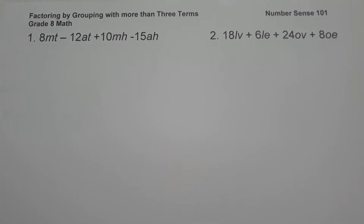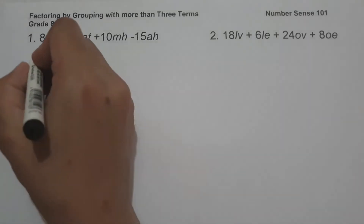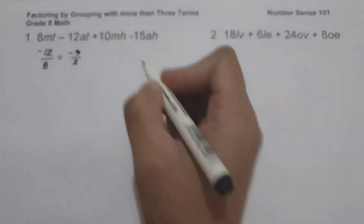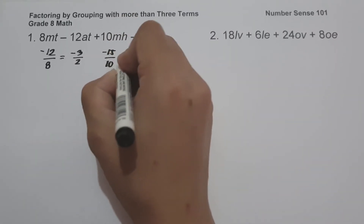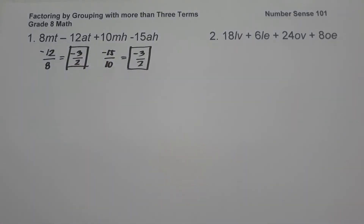In today's video we are going to talk about factoring by grouping with more than three terms and explain everything in detail. On the first example we have 8mt minus 12at plus 10mh minus 15ah. To check whether a polynomial can be solved using factoring by grouping, we compare ratios: negative 12 divided by 8 is negative 3 over 2, and negative 15 divided by 10 is also negative 3 over 2.